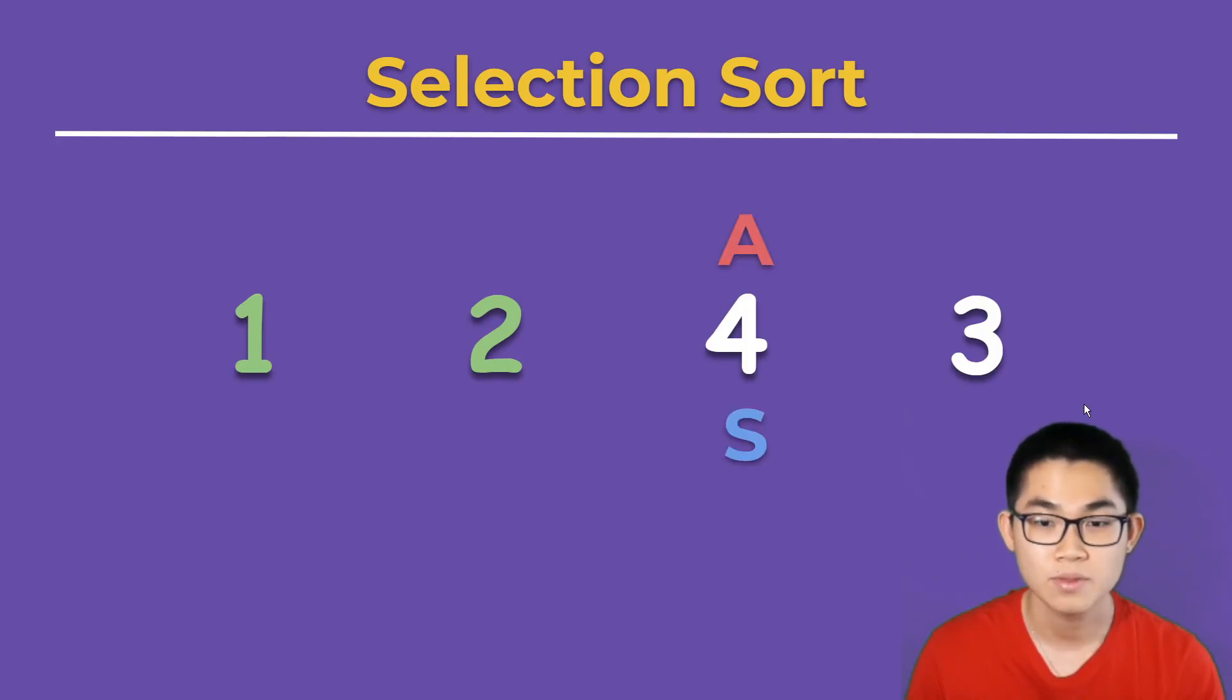We put A on the array. We put S here. Then B. 3 is smaller than 4, so 3 becomes the next smallest number. B is at the end of the array, so we swap 3 and 4.